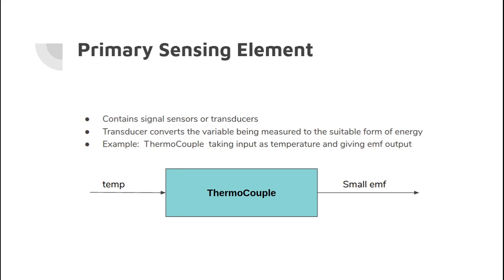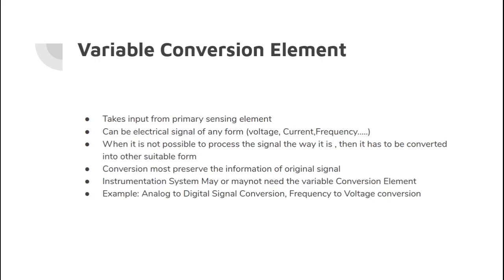Let's go through them one by one. The primary sensing element contains sensors or transducers. Transducers convert the variable being measured into a suitable energy form. For example, if we take a thermocouple, then the input variable will be temperature and the output from the transducer — which is the thermocouple — will be a small change in EMF.